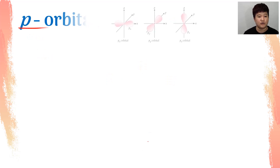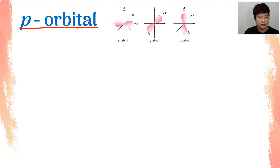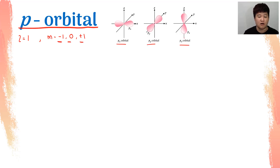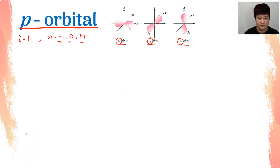Next, let's look into the P orbital. The P orbital means L equals to 1. Therefore, M would be negative 1, 0, and positive 1. Since M has three numbers, I have three arrangements of the P orbital: the PX orbital, PY orbital, and PZ orbital. PX means that the dumbbell is on the X axis, PY means the dumbbell is on the Y axis, and PZ means the dumbbell is on the Z axis.